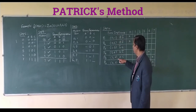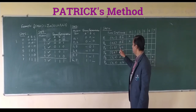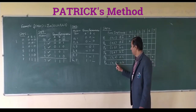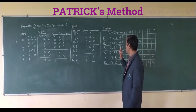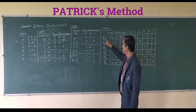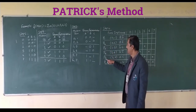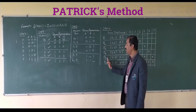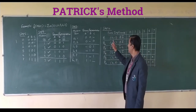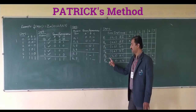I have listed all six prime implicants. For 0,1 it is Ā·B̄; for 0,2 it is Ā·C̄; for 1,5 it is B̄·C; for 2,6 it is B·C̄; for 5,7 it is A·C; and for 6,7 it is A·B. The only difference from the standard Quine-McCluskey approach is that I have now renamed all the prime implicants as P1, P2, P3, P4, P5, P6. This is just a naming convention — you can also write them as P, Q, R, S, T, U.